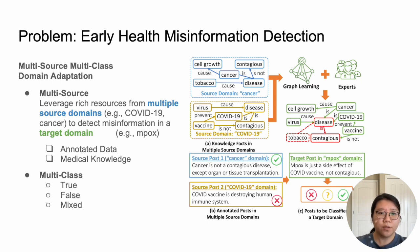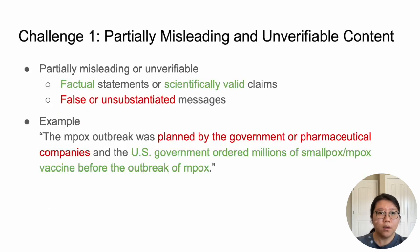There are two technical challenges in developing our multi-source, multi-class domain-adaptive solution. The first challenge lies in the partially misleading or unverifiable content. We observe that there is a non-trivial amount of posts that are partially misleading or unverifiable.